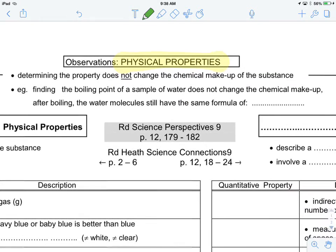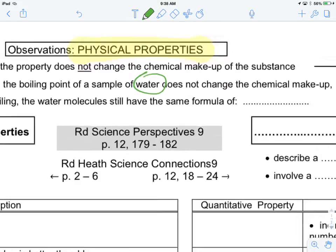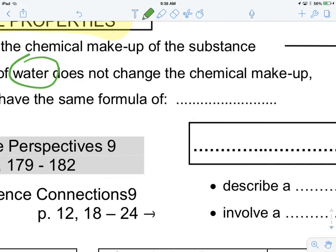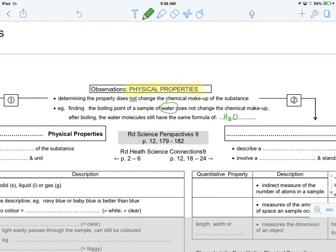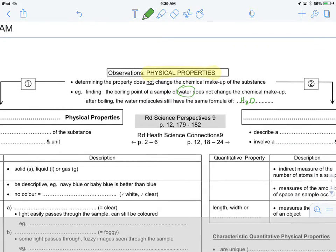Here's an example. If we want to find the boiling point of a sample of water, we do not change the chemical makeup after we boil it. Water molecules will still have the same chemical formula that we know is H2O. So this is very important that physical properties do not change the chemical makeup of the substance.